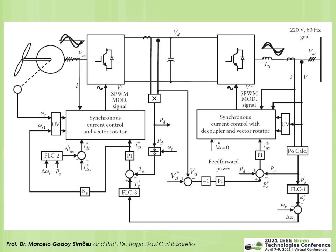The final slide presents an application from my PhD: a back-to-back double PWM converter. On the left is vector control for an induction generator driven by a wind turbine. On the right is vector control to inject current into the utility grid at unity power factor. FLC1 (fuzzy logic controller 1) receives power from the grid and searches for the optimal angular speed for the induction machine to optimize the turbine aerodynamics.